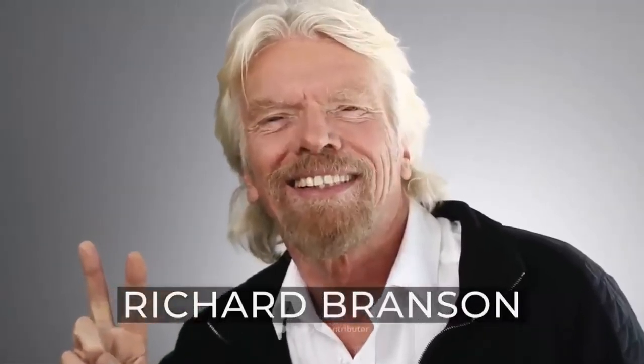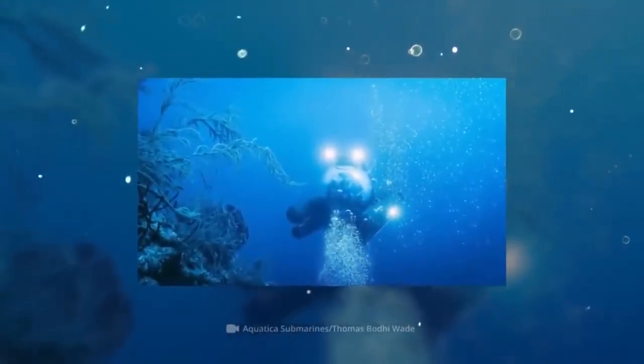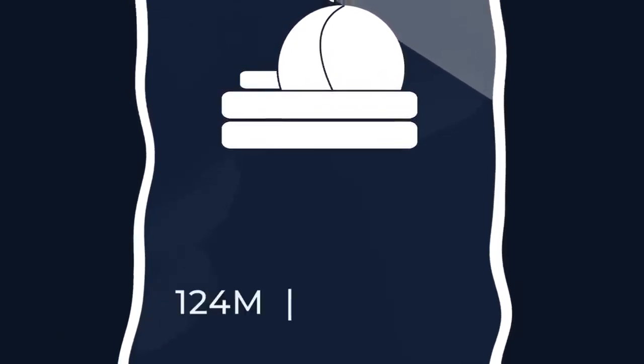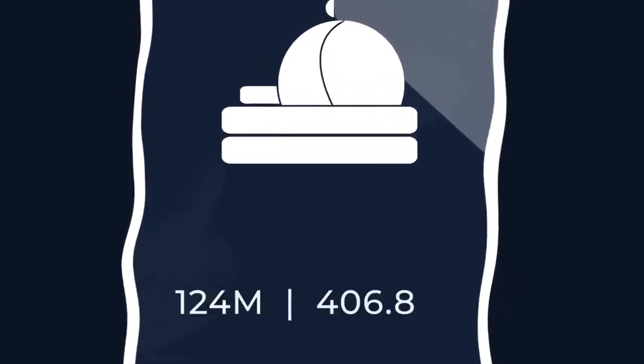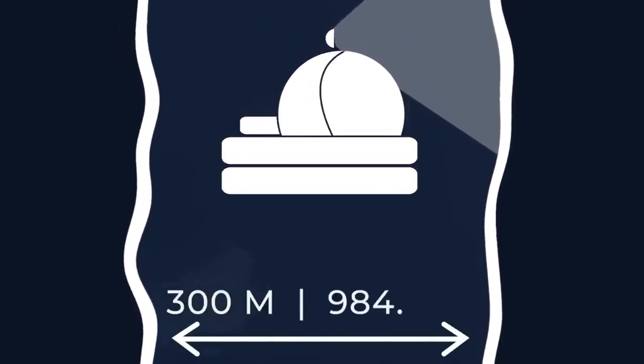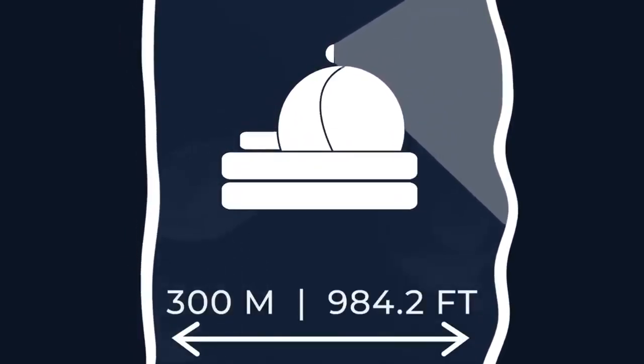And in 2019, his grandson Fabien Cousteau and billionaire Richard Branson descended to the bottom of the Great Blue Hole. It's 124 meters or 406.8 feet deep and 300 meters or 984.2 feet wide.